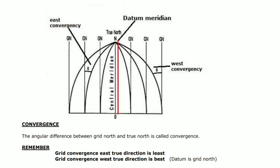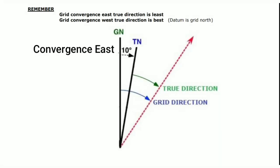Remember these terms: grid convergence east — true direction is less (ELWB). Grid convergence east means true direction is less than grid direction. For example, if grid direction is 45 degrees, then the true direction will be 35 degrees. True direction is convergence less than grid direction, and convergence will be 10 degrees.